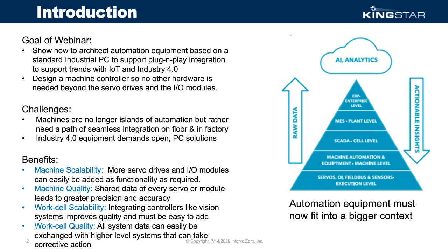The biggest challenge is that Industry 4.0 demands PC solutions that are truly open. The benefits include machine scalability — you can keep adding more servo drives. Centralized software with distributed hardware is better for things like electronic gearing because you have access to every single drive's positions. Work cell scalability lets you integrate controllers like Vision, and exchanging data with higher-level systems can offer actionable insights, not just more data.